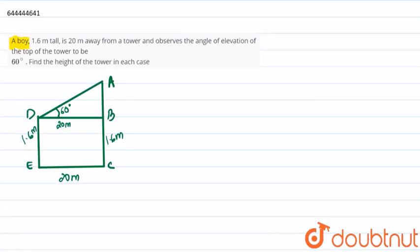A boy 1.6 meters tall is 20 meters away from a tower and observes the angle of elevation of the top of the tower to be 60 degrees. We need to find the height of the tower.